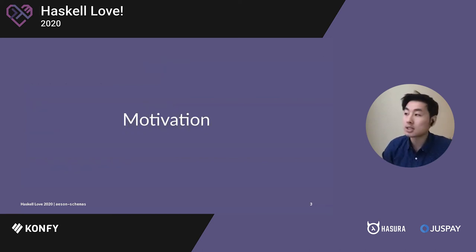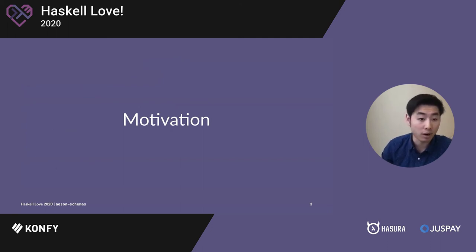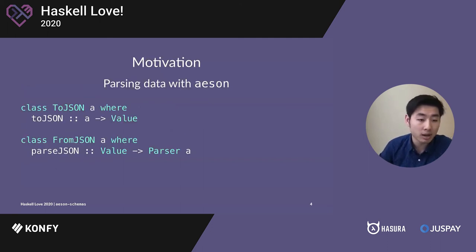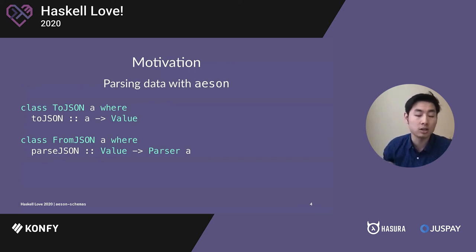So first, let's go over motivation. Why did I write this library in the first place? Well, if you've used Haskell before and you've dealt with JSON data before, you've probably used the AESON library. The AESON library provides, among many other things, these two type classes, and these two type classes let you convert your custom data type to and from a JSON value. For this talk, we're primarily going to focus on from JSON and parsing JSON data into a data type defined in Haskell.